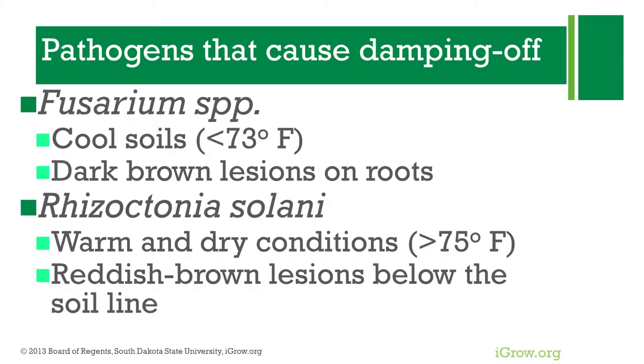For Fusarium and Rhizoctonia, these do not require a lot of moisture for infection to happen, but they are also favored by different temperatures. So it's really important that the grower establishes the cause of damping off and the cause of stand reduction so that next growing season management decisions can be made.